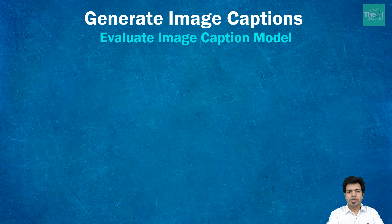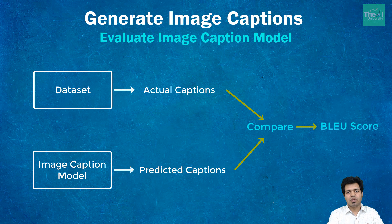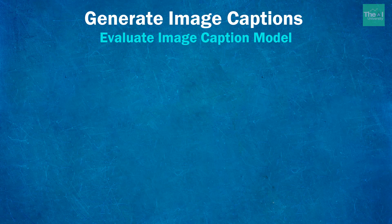So in our image caption model, we will generate captions programmatically for a given image and compare that caption with the actual caption in order to come up with the BLEU score, which will tell us how close our predicted caption is to the actual caption. One way to measure this is to look at each word in the predicted caption and see if it appears in the actual or reference caption. NLTK library has a function called sentence BLEU, which can be used to evaluate a sentence against one or more reference lists of tokens. Let me open a Jupyter notebook to show you an example.